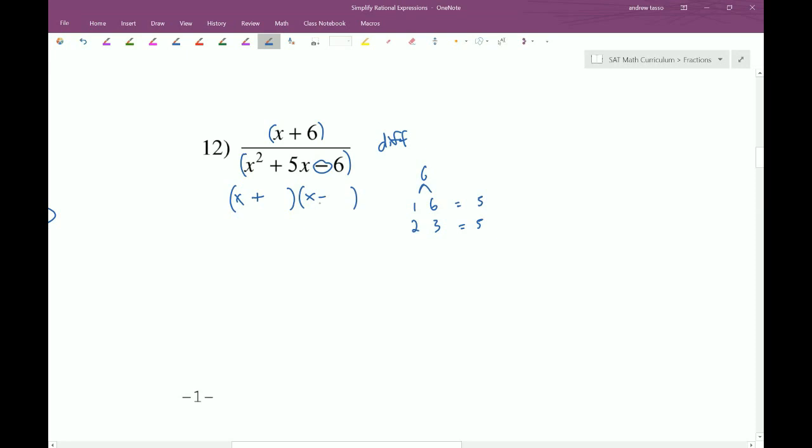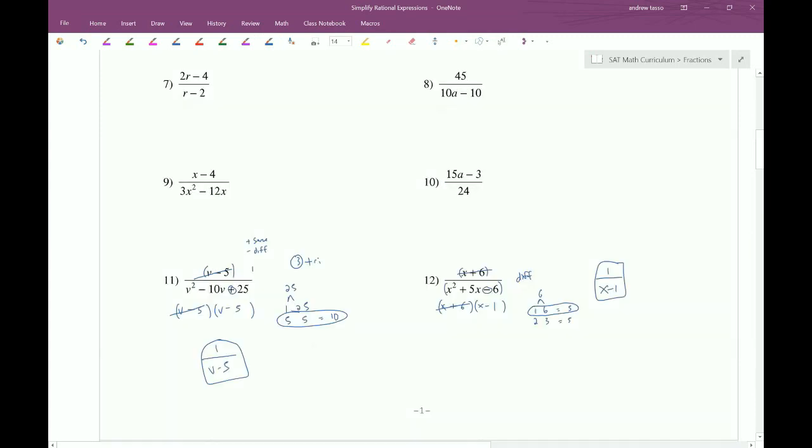Now, how do I know which one to take? Well, in this case, I just look at the signs here. Notice that they're different. That means that they're going to subtract. So 6 and 1 are going to do the trick. Then, the nice thing that happens here is we get a cancellation. So we end up with 1 over x minus 1. Remember, when we don't have anything left here, we just put a 1.